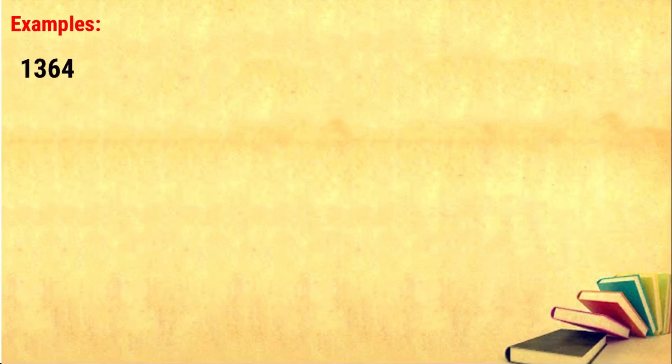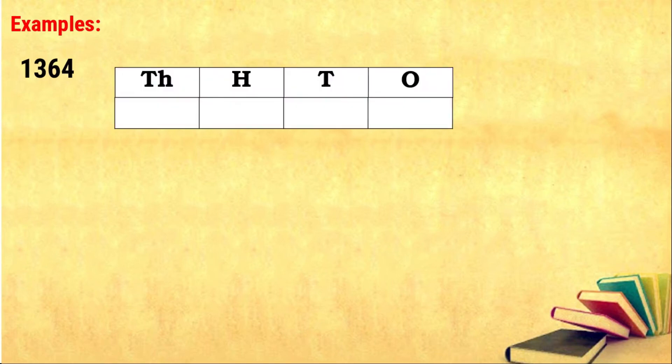Now we will see some examples. The given number is one thousand three hundred and sixty four. We are going to find the place value for these digits. Before that, we want to place these numbers in the place value chart — ones, tens, hundreds, thousands. We should always place the number from the right side, starting from the ones place.